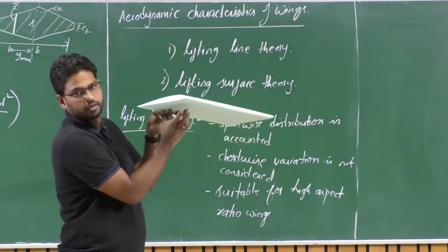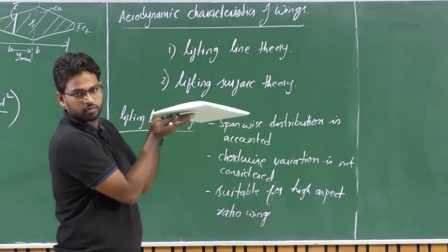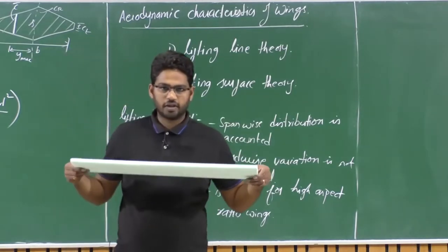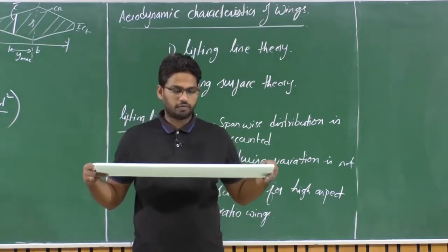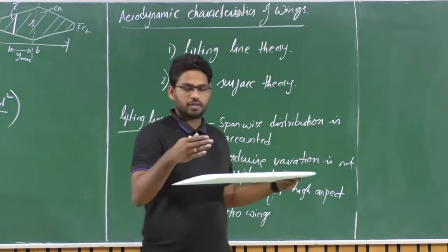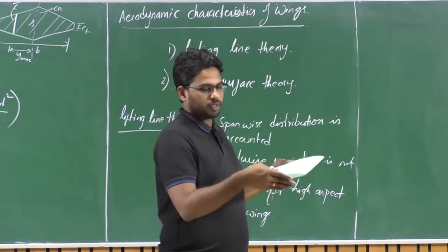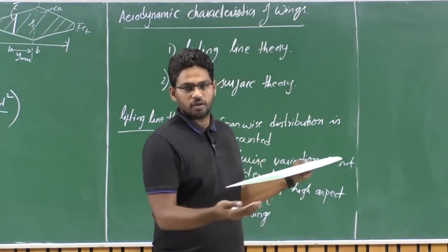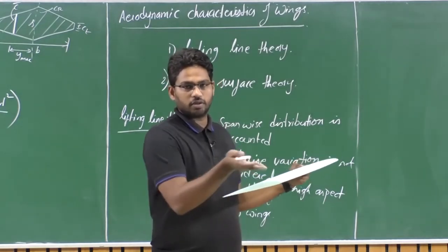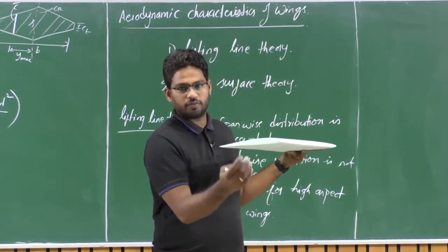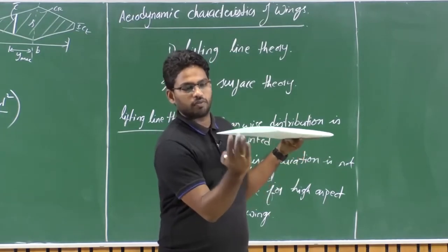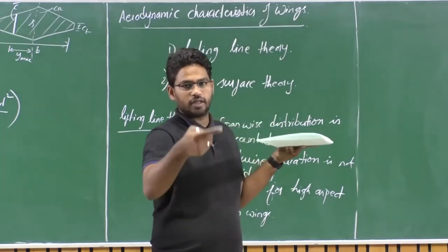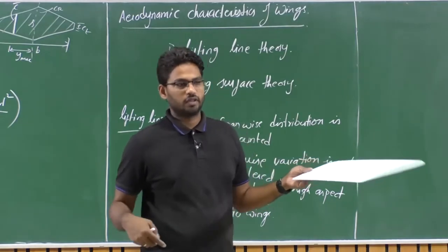There is low pressure on the top surface and high pressure on the bottom surface. The wing is a finite 3D object of finite length, so there is an abrupt end at the tip. The aerofoil at the tip still has higher pressure on the bottom and lower pressure on top. Because of this pressure difference across the tip, the flow tries to curl around from the high pressure area to the low pressure area, forming tip vortices.